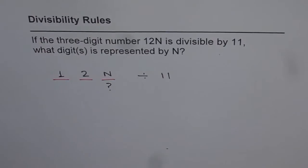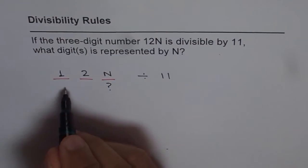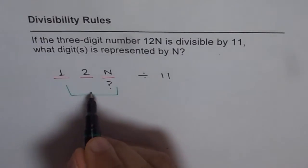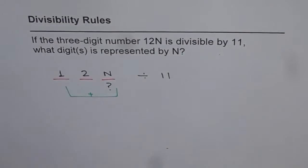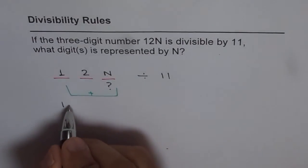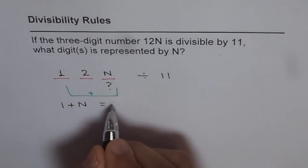Now, do you know the rule for this? Well, the rule is that if I add these two numbers, then their sum should be 2. So the rule is that if I add 1 plus N, I should get 2.